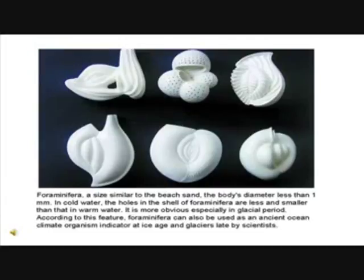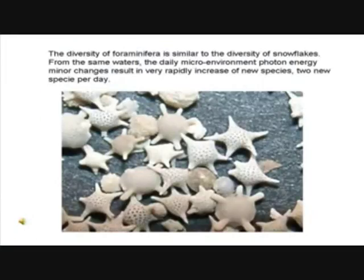Foraminifera, a size similar to beach sand, have a body diameter less than 1 mm. In cold water, the holes in the shell of Foraminifera are less and smaller than that in warm water, which is more obvious especially in glacial periods. According to this feature, Foraminifera can also be used as ancient ocean climate organism indicators at ice ages and glaciers by scientists. The diversity of Foraminifera is similar to the diversity of snowflakes. From the same waters, the daily microenvironment photon energy minor changes result in a very rapid increase of new species — two new species per day.